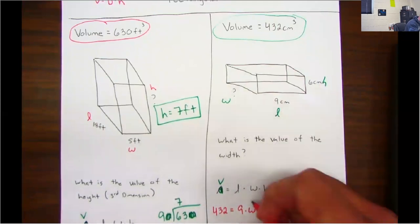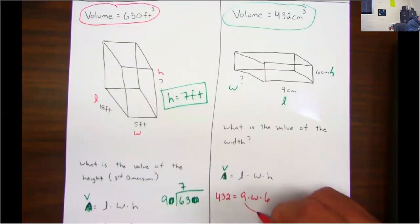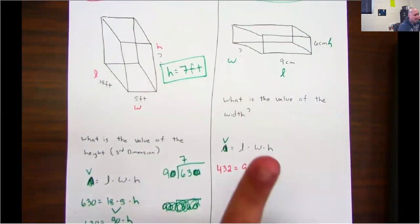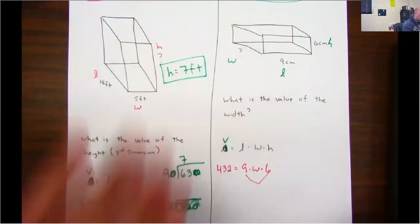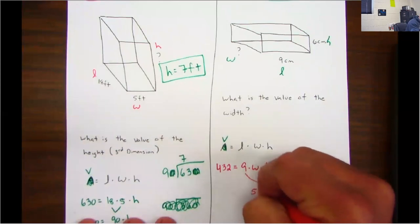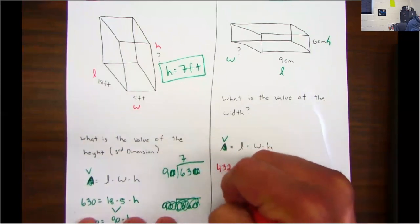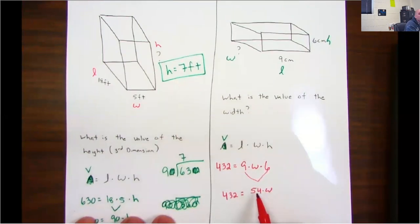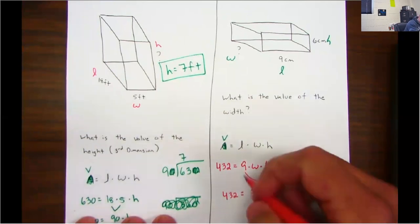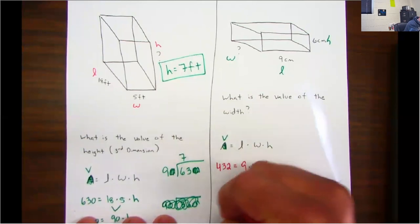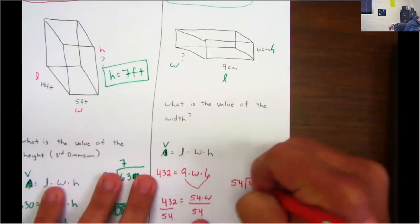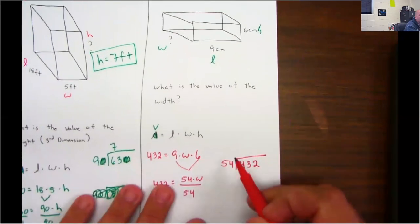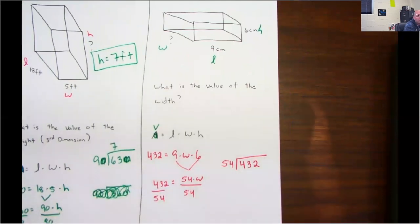My length is 9, my width is unknown, and my height is 6. Well guys, what's 9 times 6? 9, 18, 27, 36, 45, 54. Well, 54 times what number will give me 432? If we don't know, we're going to divide. Well guys, we have to figure out how many times can 54 go into 432.